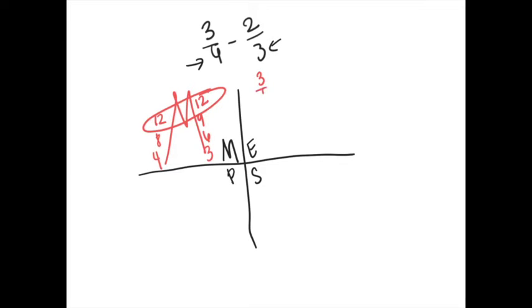So we're going to take our three-fourths and our two-thirds, and we're going to give them brand new denominators of twelve. Now we can't just stick the three and two on top of the new denominators because they have to do a little bit of changing, too.